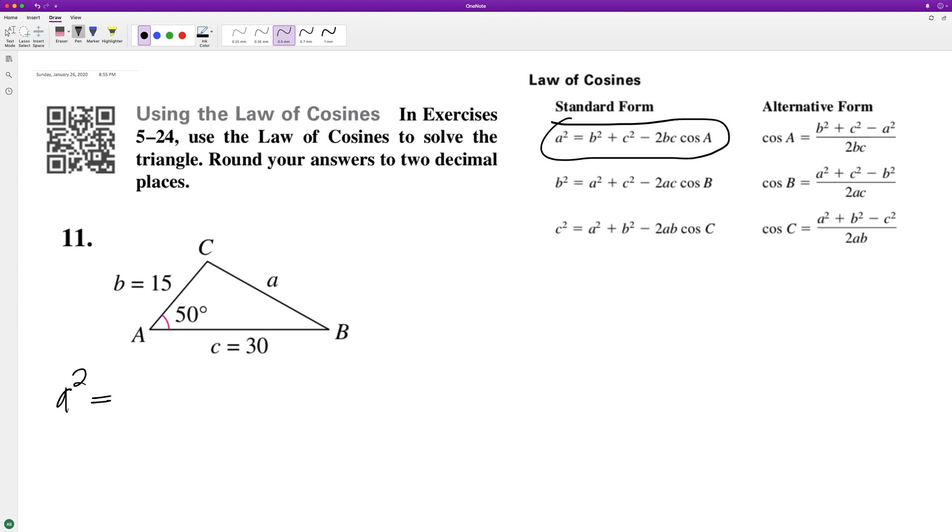We'll set a squared equals b squared plus c squared minus 2 times b times c times the cosine of 50 degrees. So we take the square root of both sides.